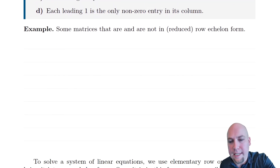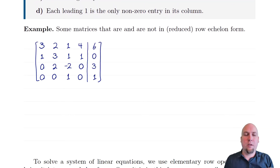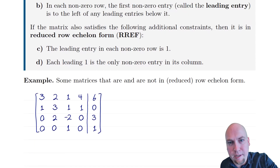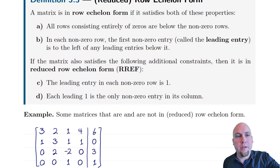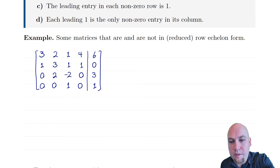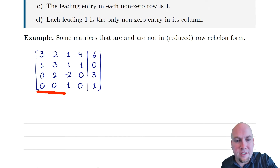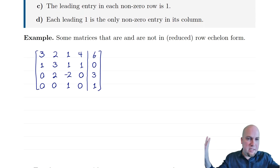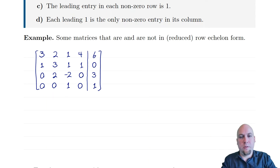Let's do an example. The question is: is this matrix in row echelon form? The first thing to ask is property A — does it satisfy property A? Are all of the zero rows tucked away at the bottom? Well, this matrix has no zero rows; there's no row that's entirely zeros. So property A is trivially satisfied.